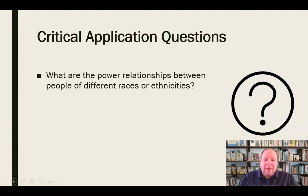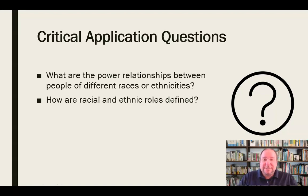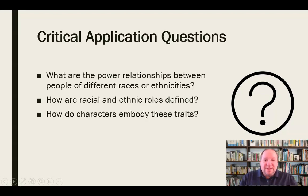First, what are the power relationships between people of different races or ethnicities, and how is that expressed in the artifact? Is there stereotyping going on — cultural stereotypes about races and ethnicities — or is everything being whitewashed to make it seem like race and ethnicity is not a consideration at all? The truth is somewhere in the middle, so how are racial and ethnic roles being defined in this artifact?